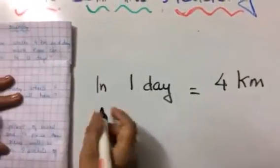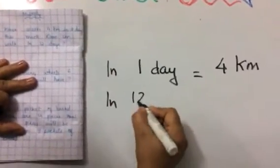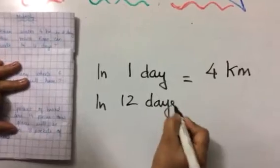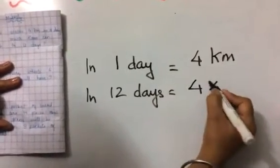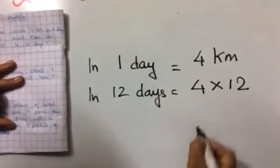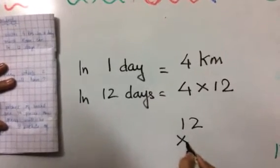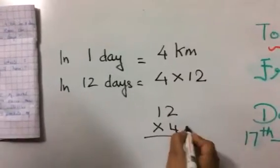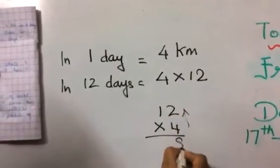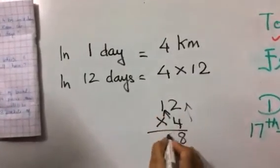In one day, how much Kiran walks? 4 kilometers. In 12 days, how much Kiran will walk? Very nice. 4 multiplied by 12. We can write like this also, 12 multiplied by 4. So what will be the answer? Very good. 4-2s are 8, 4-1s are 4.